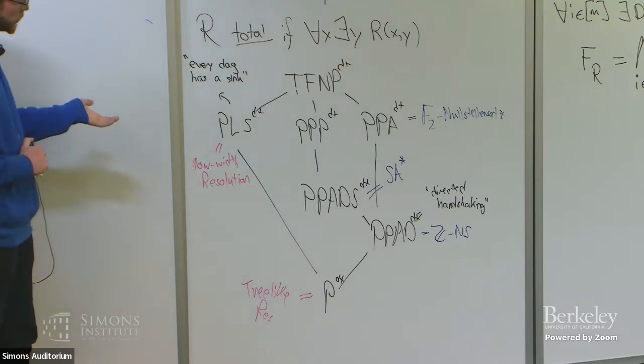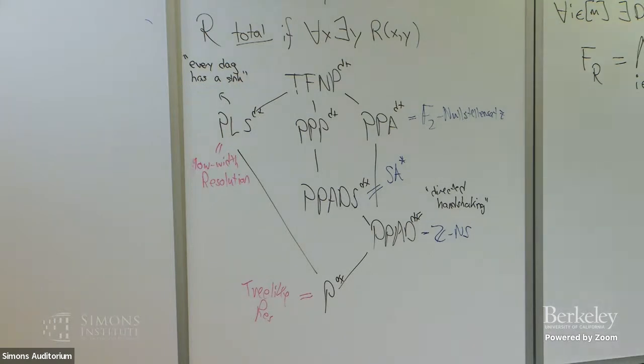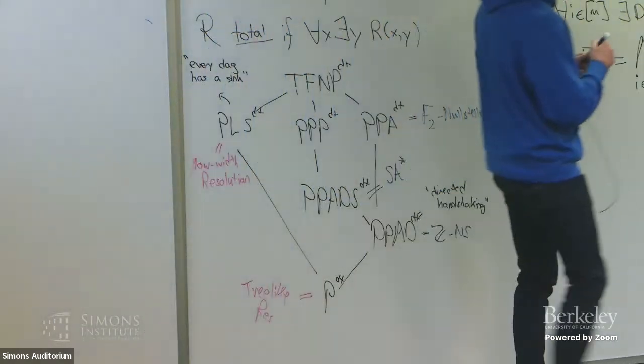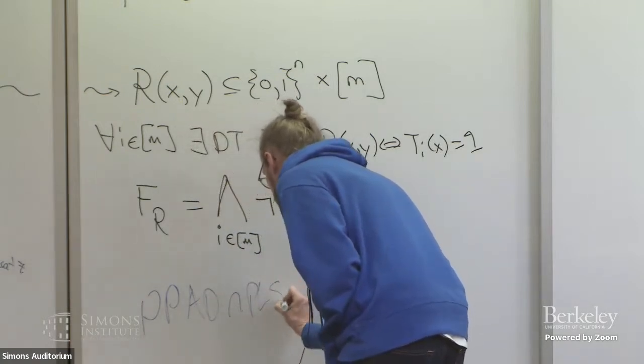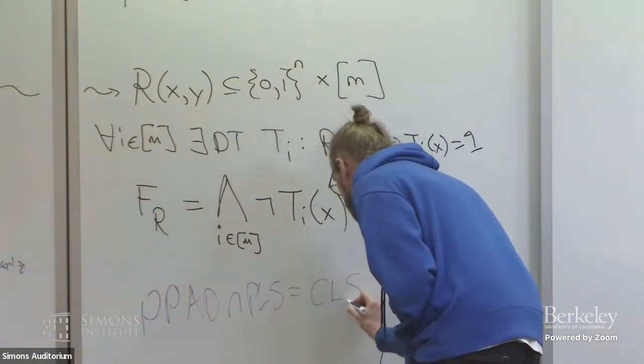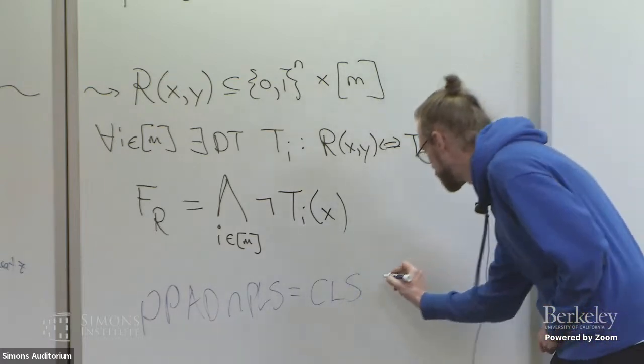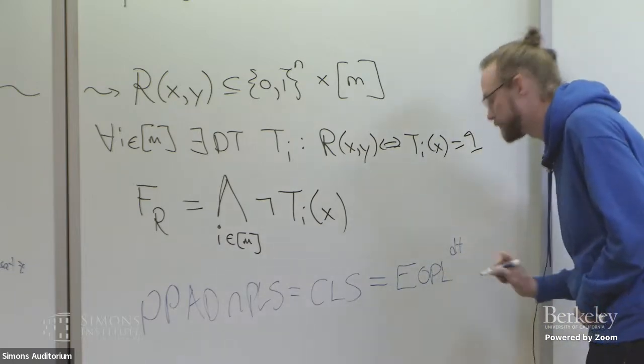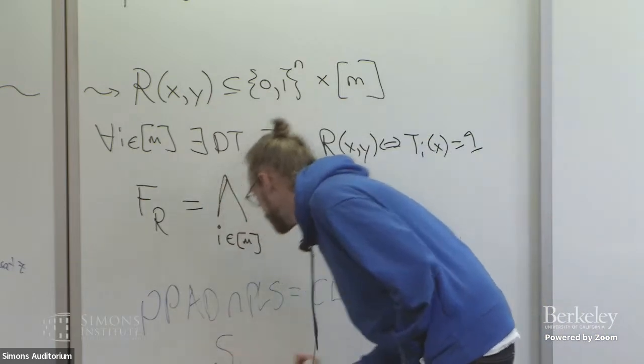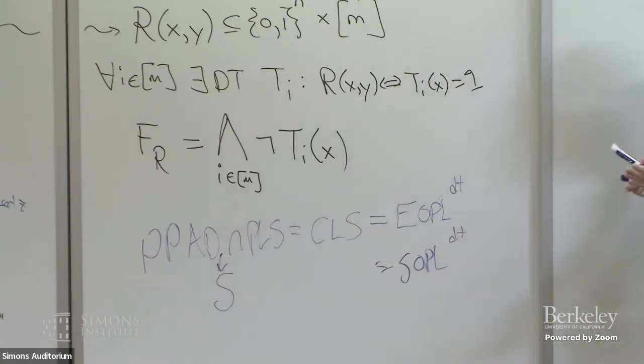Our contributions have been to show that these other classes also correspond to really nice proof systems. So for this class PPA, it turns out that this is exactly Nullstellensatz over F2, which if you've seen Tony's talk, you'll recognize it as an algebraic proof system. PPAD corresponds to Nullstellensatz over the integers, and PPADS corresponds to Sherali-Adams, which is just the proof system from linear programming, albeit with low coefficients. And this is only a small fraction of the kinds of things we can use. And maybe one more nice result to mention is: there was this beautiful result recently showing an intersection theorem, namely that PPAD intersect PLS is a well-defined class, turns out to be equal to this class CLS. This was best paper at STOC, I believe, a couple, like a year or two ago.